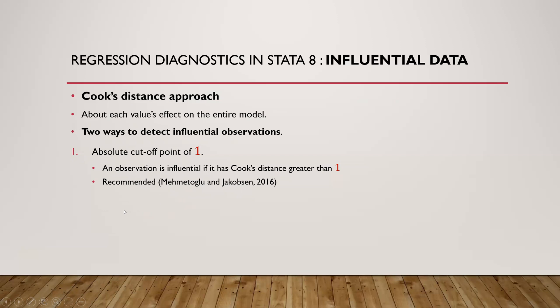The second approach is to adjust for size in terms of number of observations. We have to divide four by number of observations. So if we have 74 observations, we divide four by 74. Then look at the Cook's distance values that are greater than this result, and we conclude that they are influential.